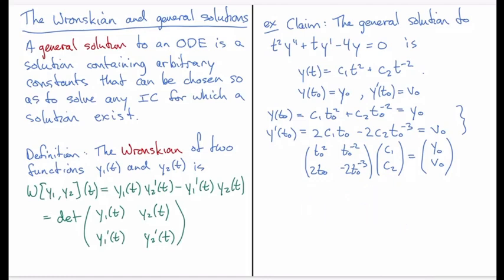And if it is invertible, then we do have a solution for all initial conditions. So we can just use the condition that the determinant being 0 or non-0 will tell us about invertibility. The determinant of this is going to be -2t₀⁻¹ coming from the product across here, minus the product across here, so that's 2t₀⁻¹, so that's -4t₀⁻¹.